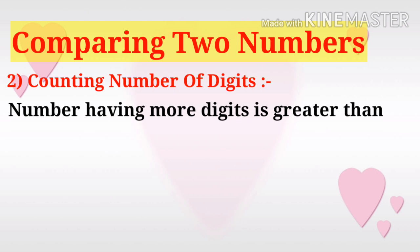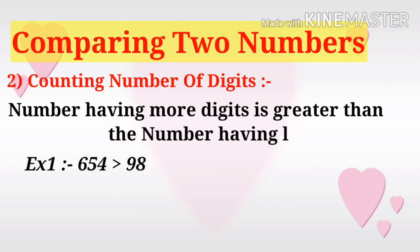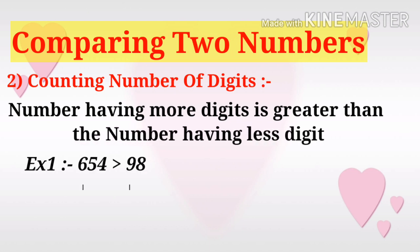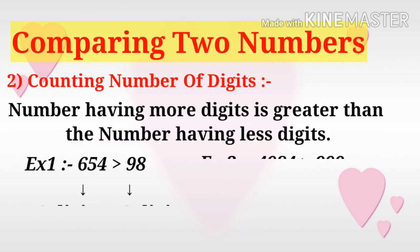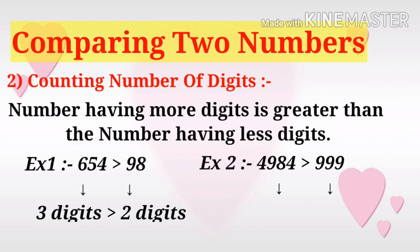We can say that a number having more digits is greater than a number having fewer digits. For example, 654 is greater than 98 because 654 has three digits and 98 has only two digits.